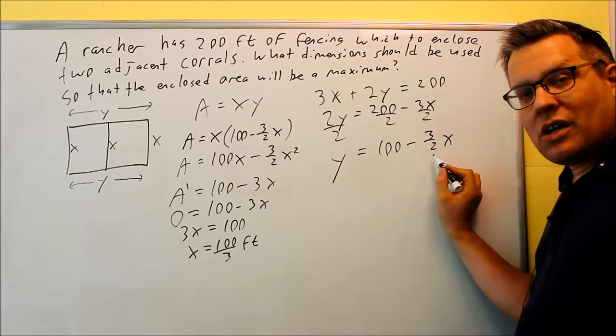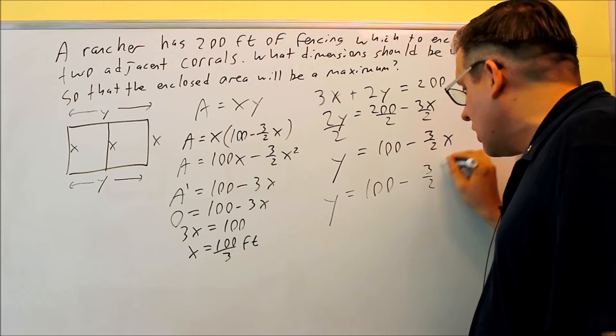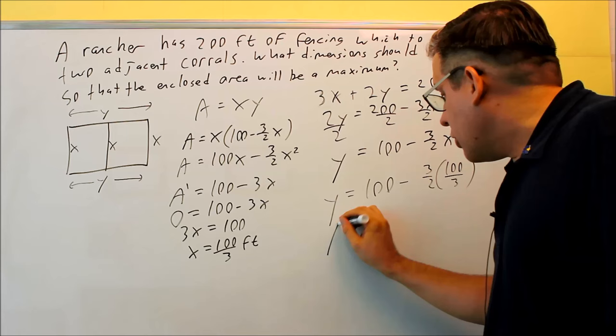We have to find the x and the y. So, I'm going to put this back into here. That's going to give us the y value. 100 minus 3 halves, then times 100 over 3. When we do that, the 3's are going to cancel.